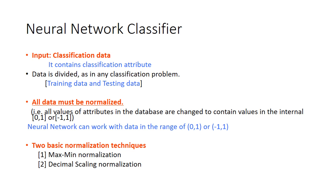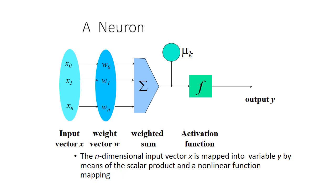We have to normalize the features in order to get similar contribution from both. There are two basic techniques: max-mean normalization and decimal scaling normalization. There are other techniques as well, but we are not going into the detail of normalization techniques because we are focusing on the neural network itself.